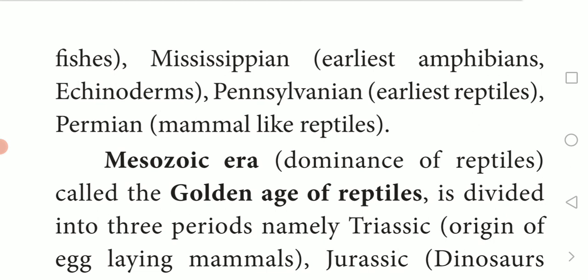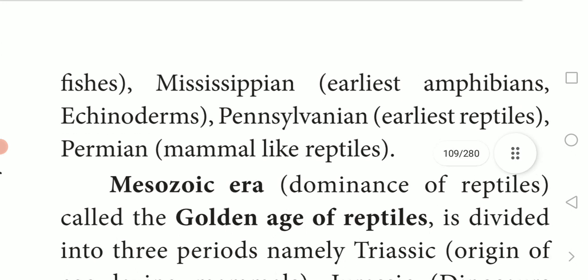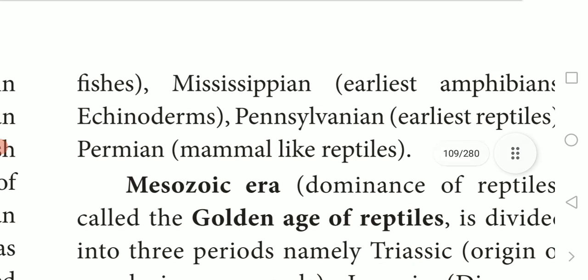The sixth period is Pennsylvanian - this is when the earliest reptiles appeared. The seventh and last period of the Paleozoic era is the Permian period, in which mammal-like reptiles appeared.